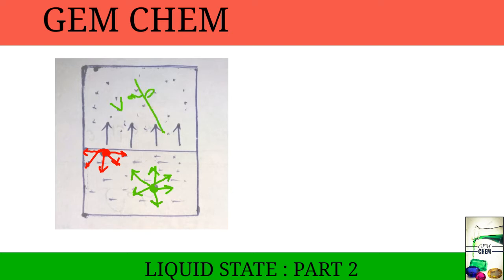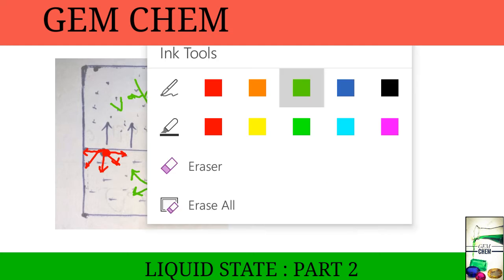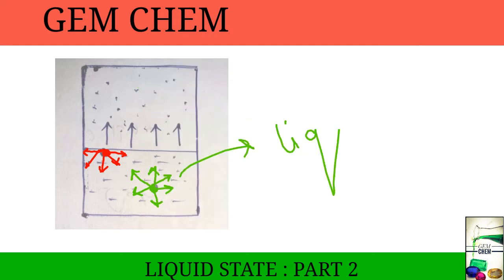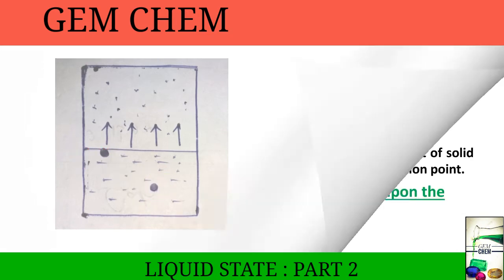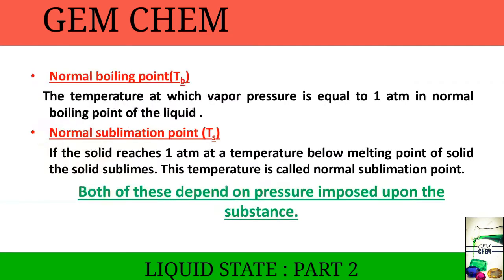This is our vapor phase and this is our liquid phase. In order to pass into the vapor phase, the surface molecule must possess sufficient energy to overcome the force of attraction. So we will derive what amount of pressure and energy is required to develop a vapor pressure. Molecules located at the surface have a higher probability of going into the vapor phase.